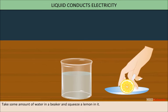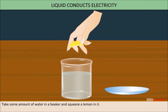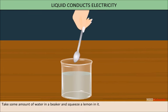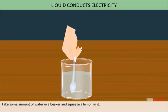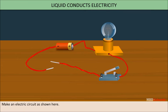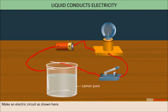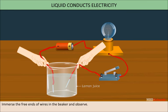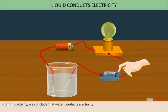Take some amount of water in a beaker and squeeze the lemon in it. Make an electric circuit as shown here. Immerse the free end of wires in it and observe. The bulb glows. From this activity we conclude that liquid conducts electricity.